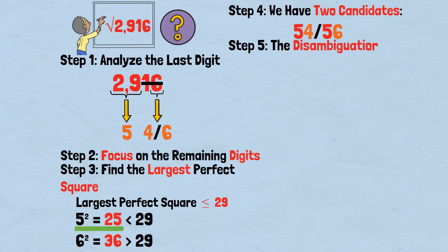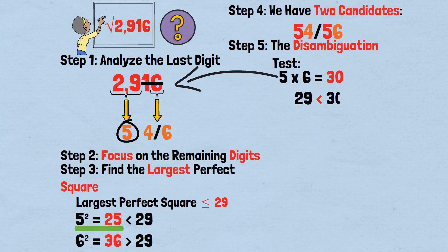Step 5: The disambiguation test. Multiply the first digit, 5, by the next consecutive integer, 6. 5 times 6 equals 30. Compare this with our remaining digits, 29. Since 29 is less than 30, we choose the smaller ending digit, 4. Therefore, the square root of 2,916 is 54. Verification: 54 squared equals 54 times 54 equals 2,916. Perfect.